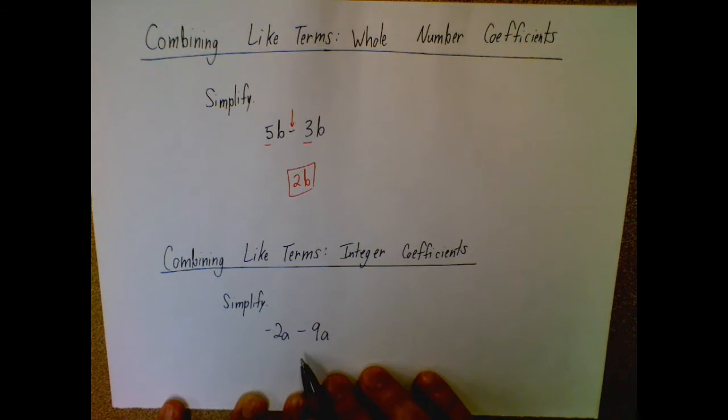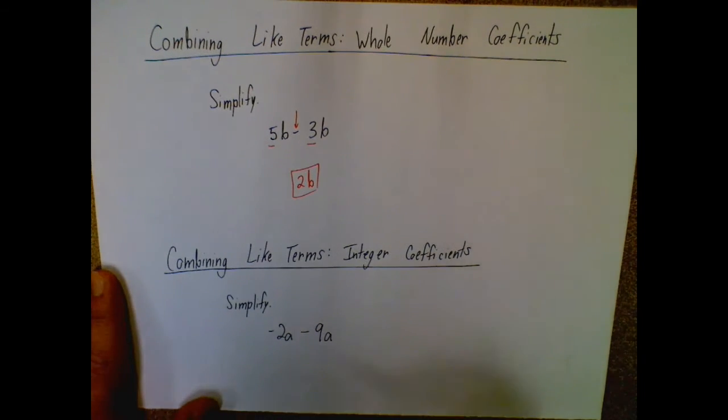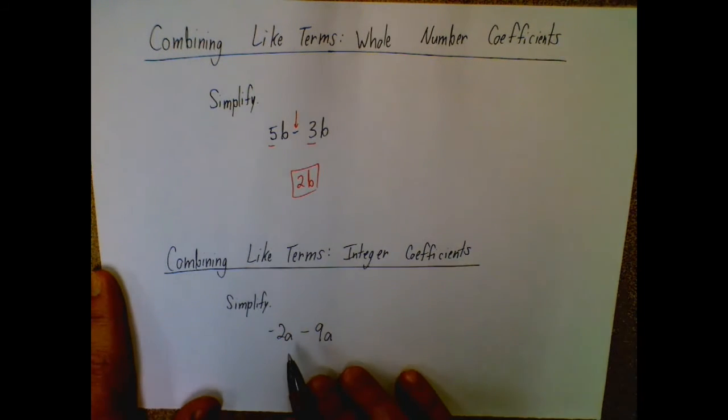When we come down here to integers, it works the same way, we just may have some negative numbers, like we have this negative 2 here at the beginning. So first, make sure they're like terms. I have a single a here and a single a here, so they are like terms.